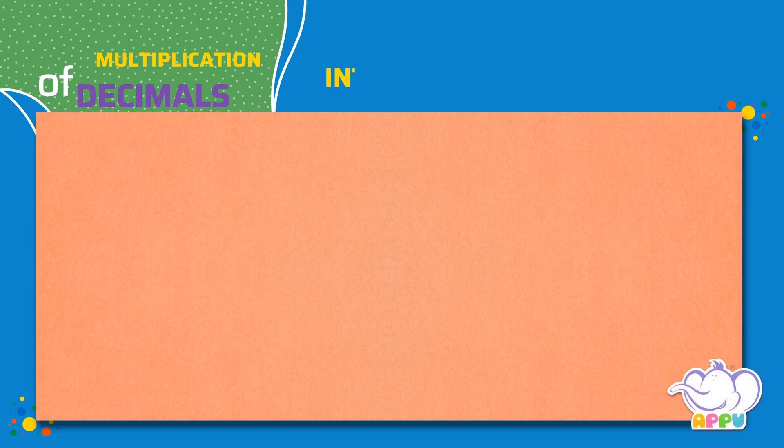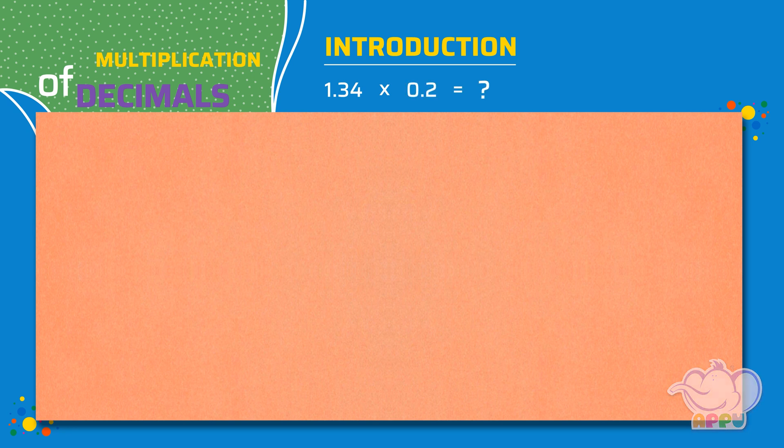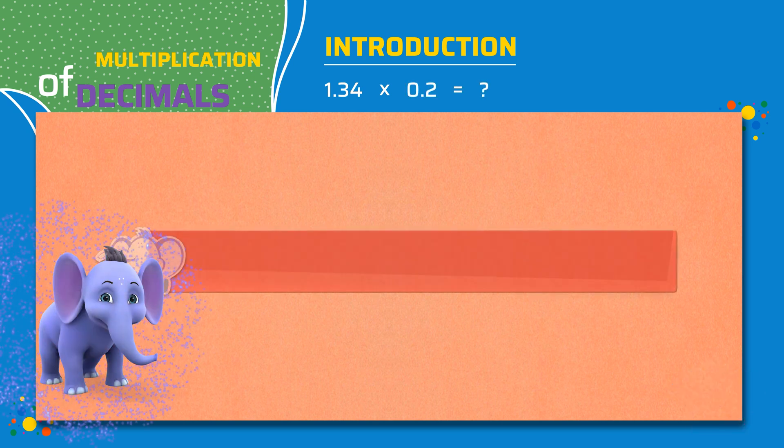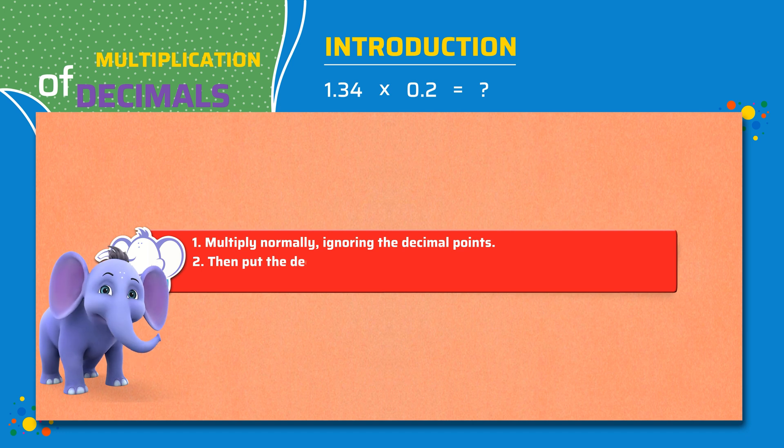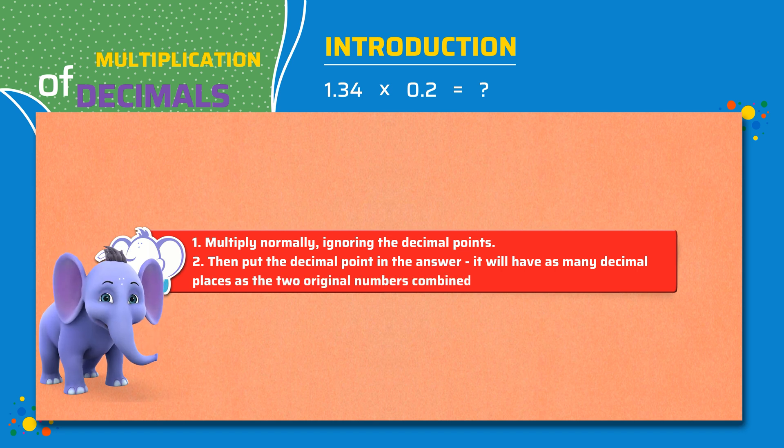Multiplication of decimals. Introduction. Let's multiply decimal numbers. What is 1.34 times 0.2? Multiply normally, ignoring the decimal point. Then put the decimal point in the answer. It will have as many decimal places as the two original numbers combined.